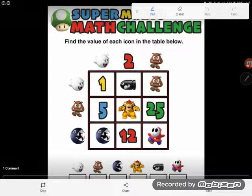I don't know what's going on. I have a grid and I think these pictures up here must represent some numbers that I don't know and I'm trying to figure them out because directions say find the value of each icon in the table below. So I guess it's like kind of algebra but Mario algebra.